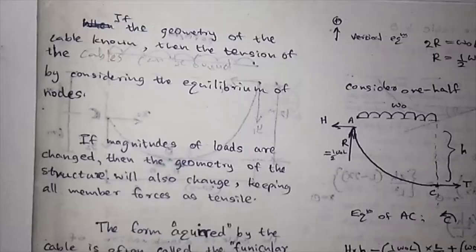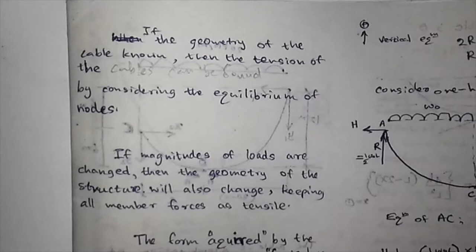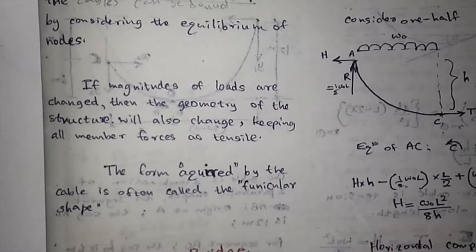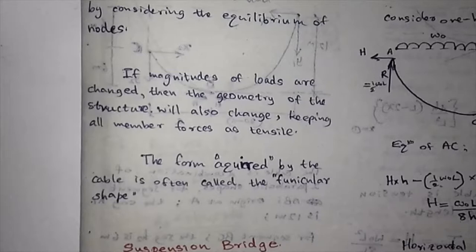If the geometry of the cable is known, then the tension can be found easily by considering the equilibrium of the nodes. If magnitudes of loads are changed, the geometry will also change, keeping all member forces as tensile. The form acquired by the cable is often called the funicular shape.